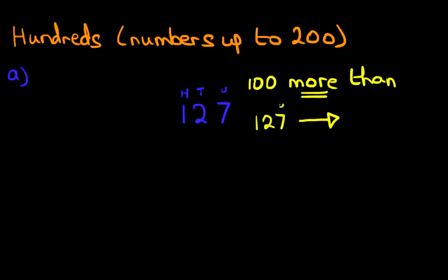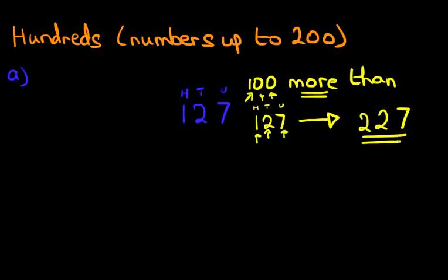Let's write this number down: 127. The first thing is, are we going to count forwards or backwards? Well we're doing more than, so therefore we are counting forwards. Now let's label it — units, tens, hundreds. The units digit seven is not going to change because we're going forward by zero, so that remains seven. The two is not going to change either, so that remains two. As for the one, that is going forward by one, and that becomes two. So 100 more than 127 is 227. The only digit that changed was the hundreds.